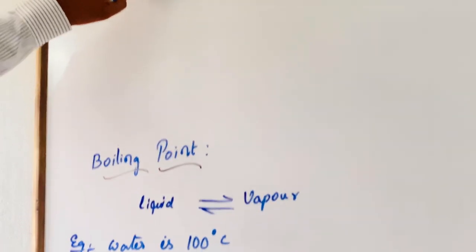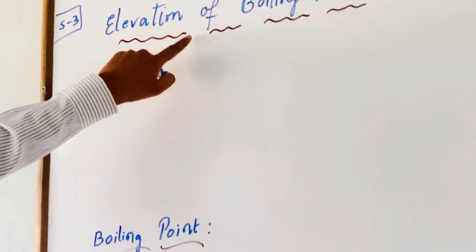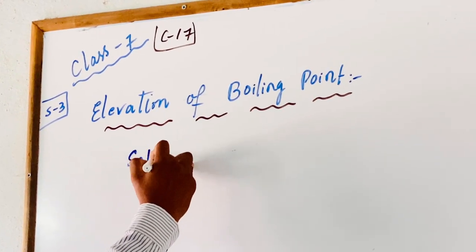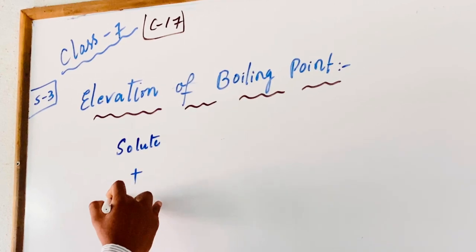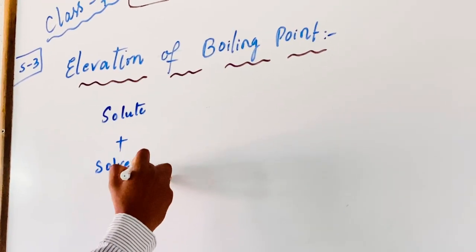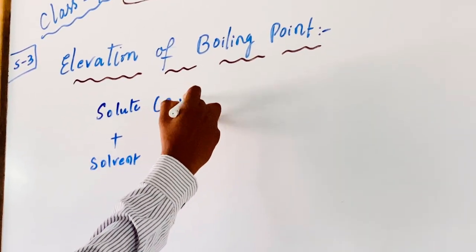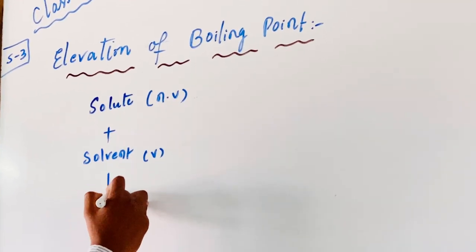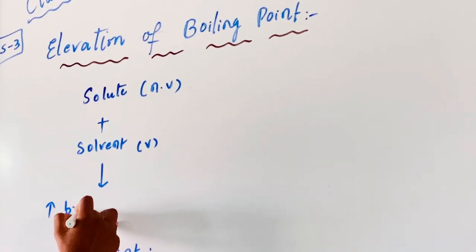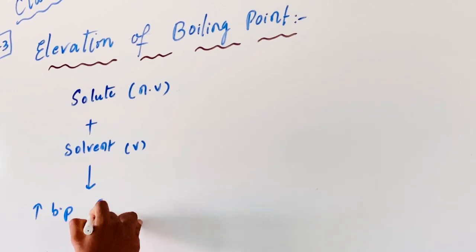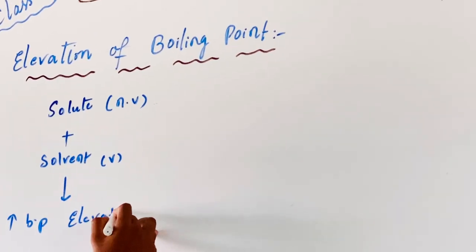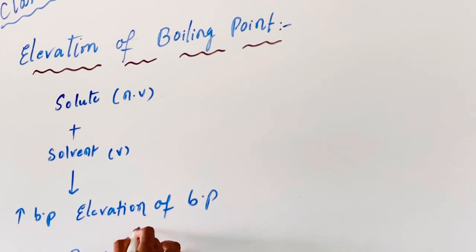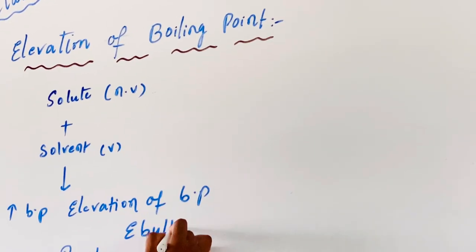What is the definition of elevation of boiling point? When a non-volatile solute is added to the volatile solvent, the increase in boiling point is known as elevation of boiling point. It is also known as ebullioscopy.